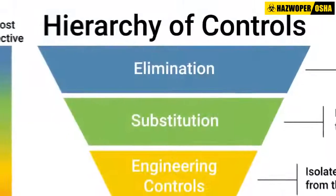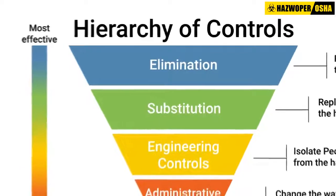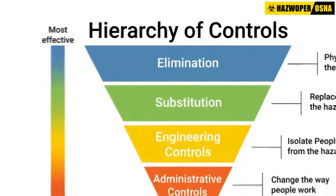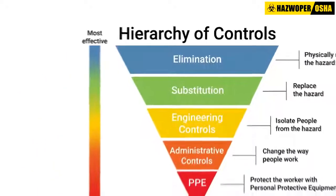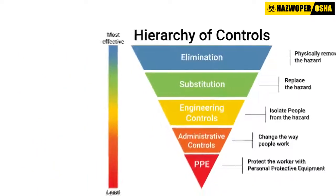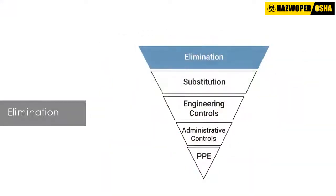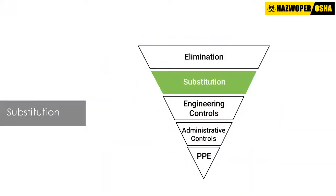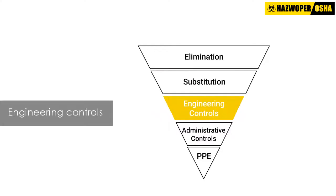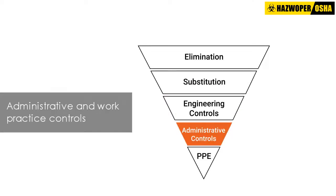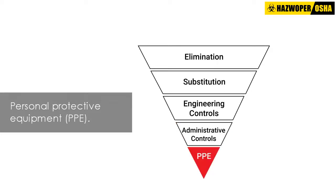The Hierarchy of Controls consists of the following activities and interventions, listed from the most effective to least effective: Elimination, Substitution, Engineering Controls, Administrative and Work Practice Controls, and Personal Protective Equipment.